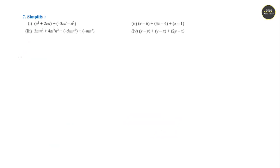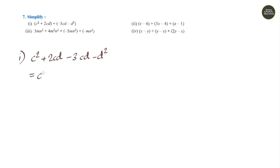Section 7, Simplify. Question 1: c square plus 2cd minus 3cd minus d square. Here 2cd and 3cd are like terms, so grouping them together gives c square minus cd plus b square.